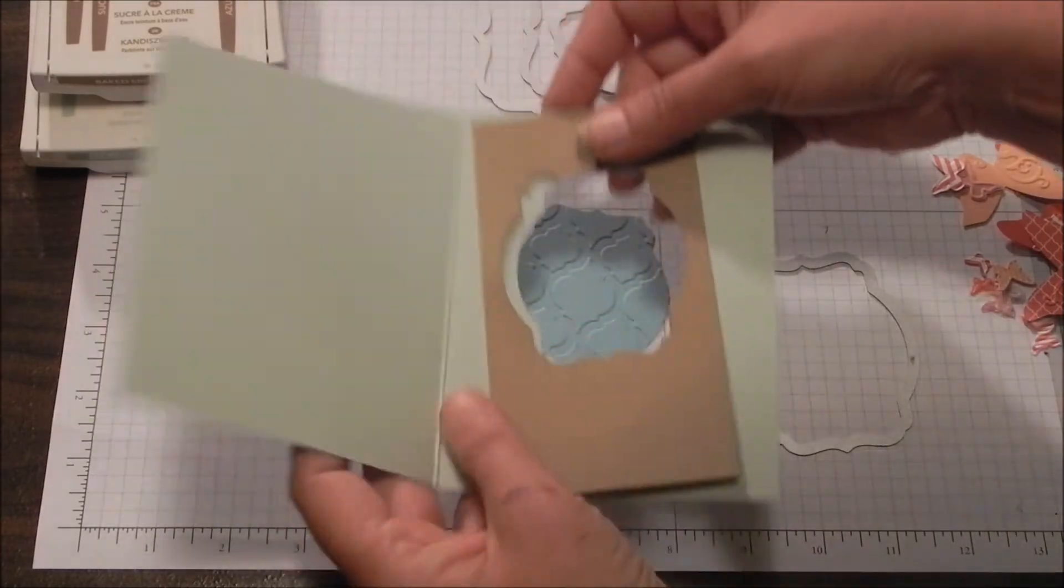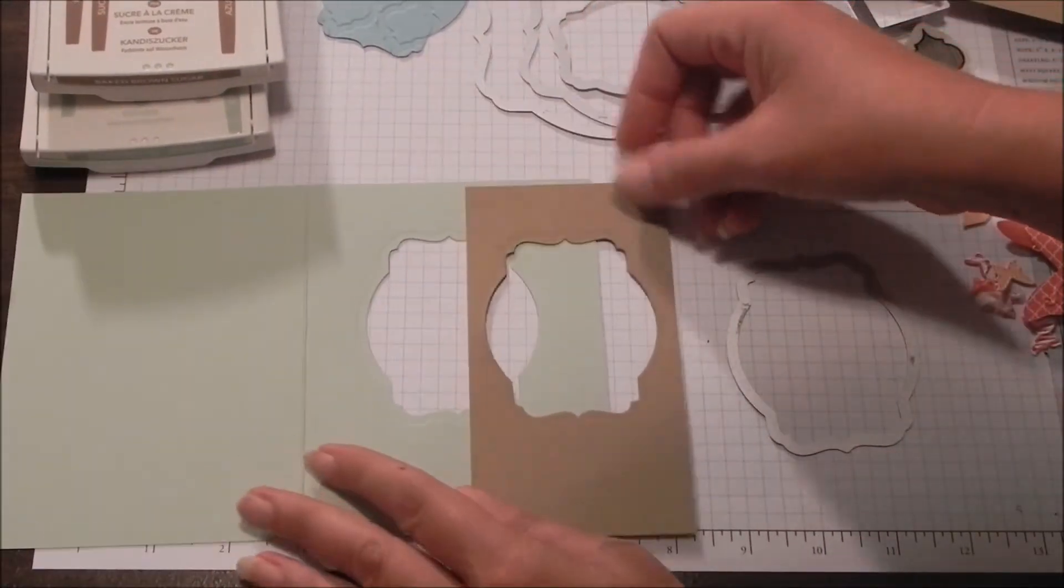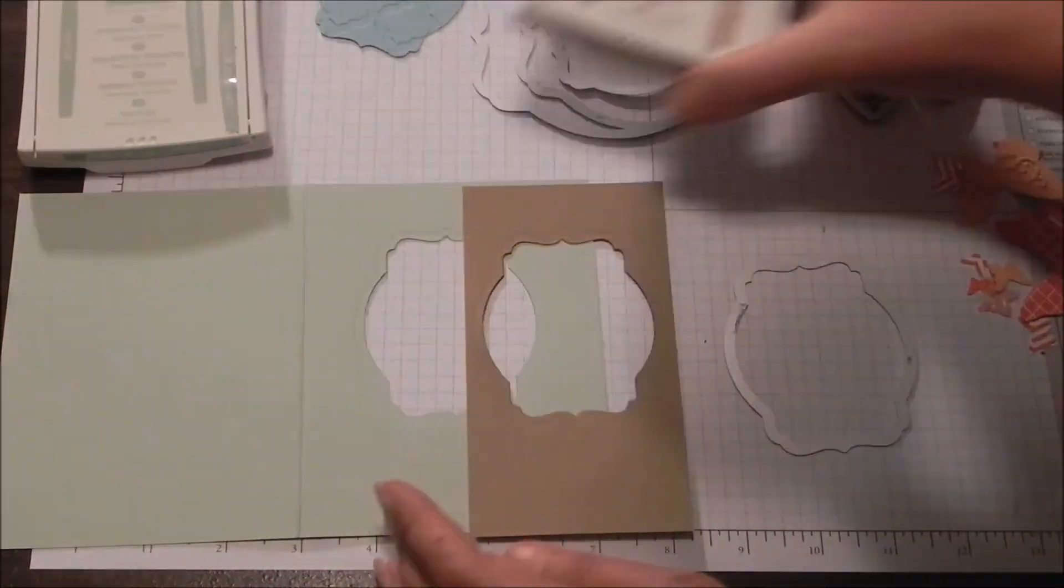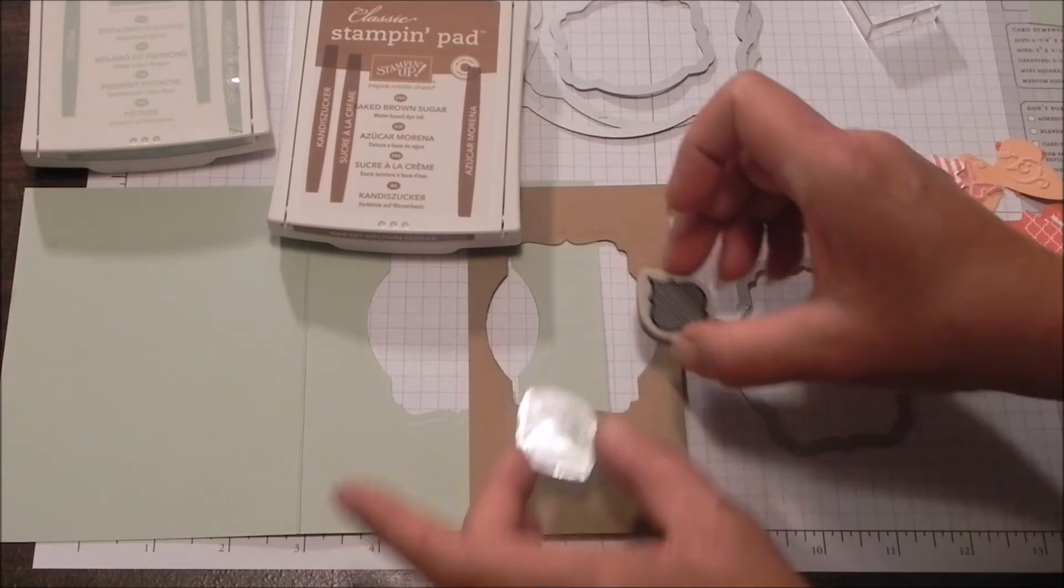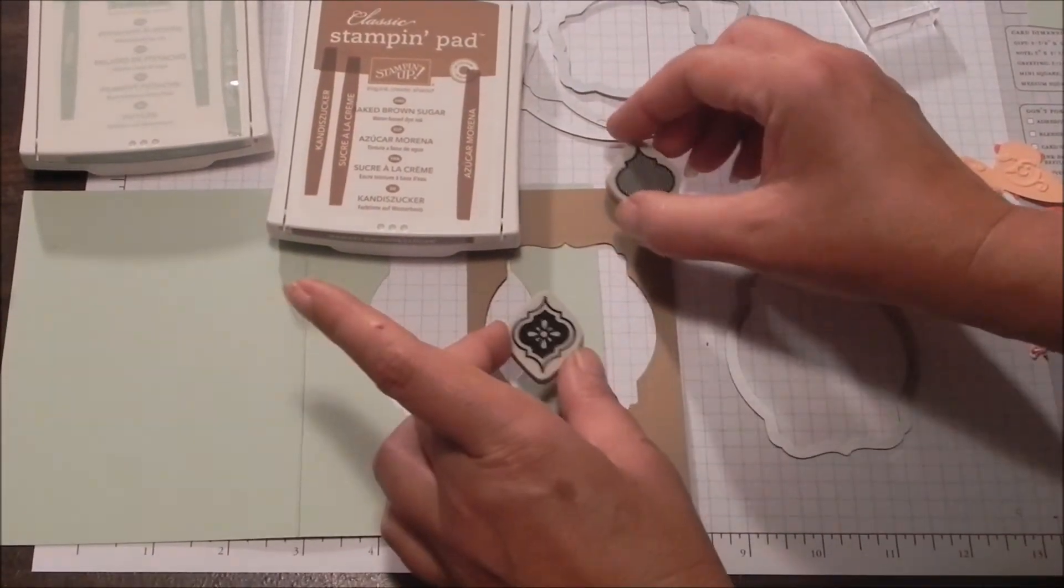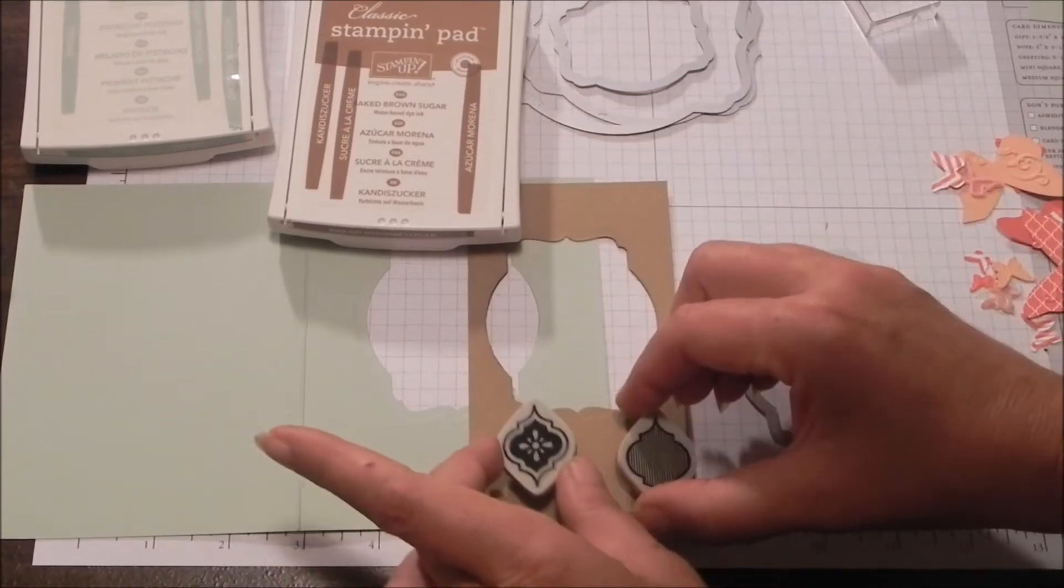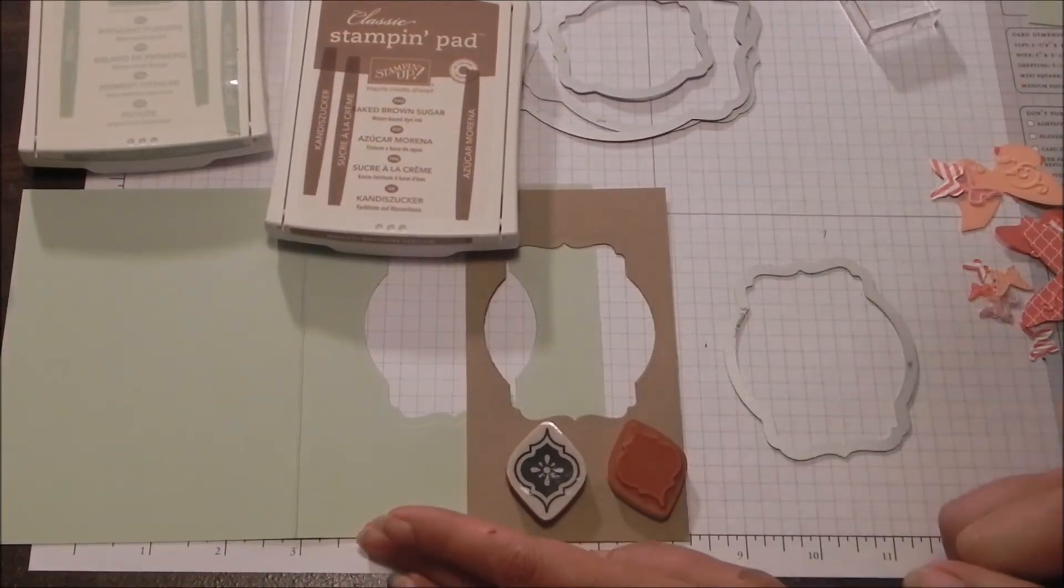And then the next thing I'm going to do before I actually start assembling anything is I'm going to randomly stamp color on color some mosaics. So I've got my Mosaic Madness stamp set. I've picked out a few and I'm just going to stamp kind of randomly. I think I'll keep them all straight up and down, both on this panel and on the Pistachio Green. And then we'll get back.